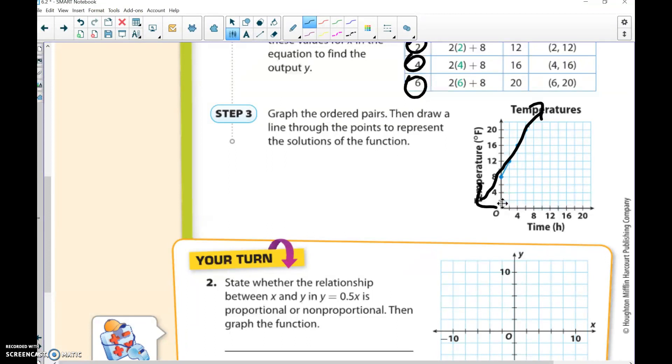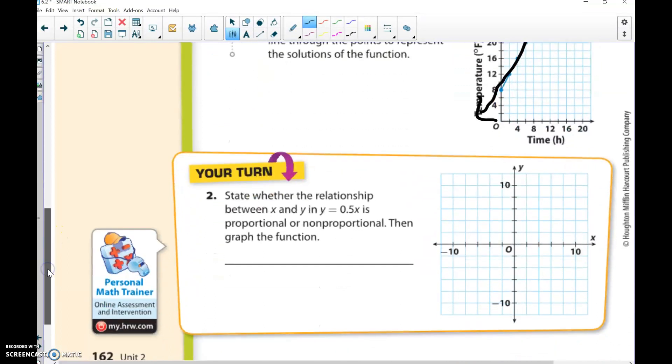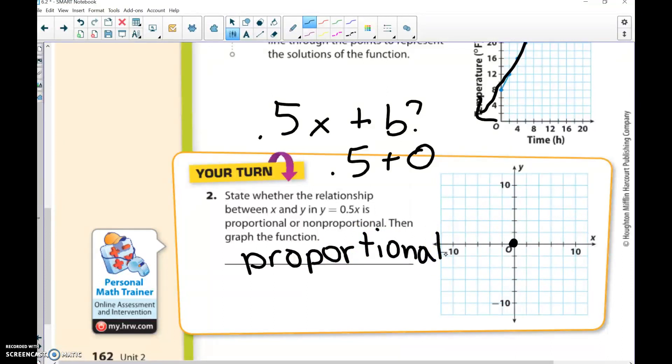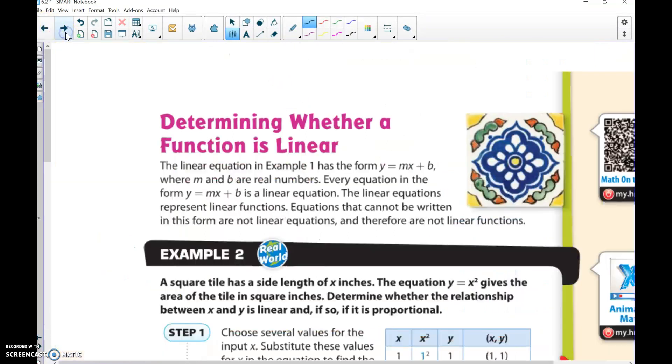This one says state whether the relationship between x and y in y = 0.5x is proportional or non-proportional. Remember for proportional, we can't have that y-intercept. Since 0.5x doesn't have a y-intercept, there's no b there, that means it's 0.5x plus zero, which means it would be proportional. Proportional means it has to be a straight line and go through the zero-zero point, through the origin.